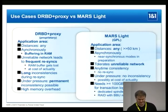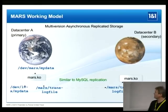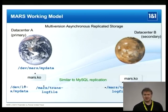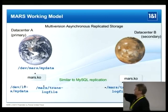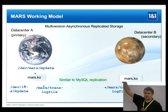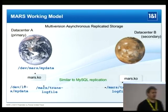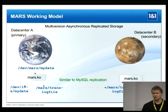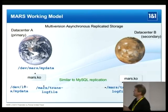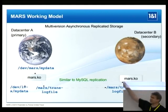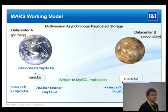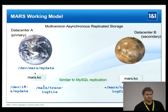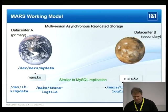The working model of MARS is more similar to databases. You can start with a pre-existing block device that already contains data, then load a kernel module called MARS, and you get a virtual device — /dev/mars/mydata. You can write data to it, and all your write operations are written to a transaction log file in the /mars filesystem, which must have the right size for doing that.